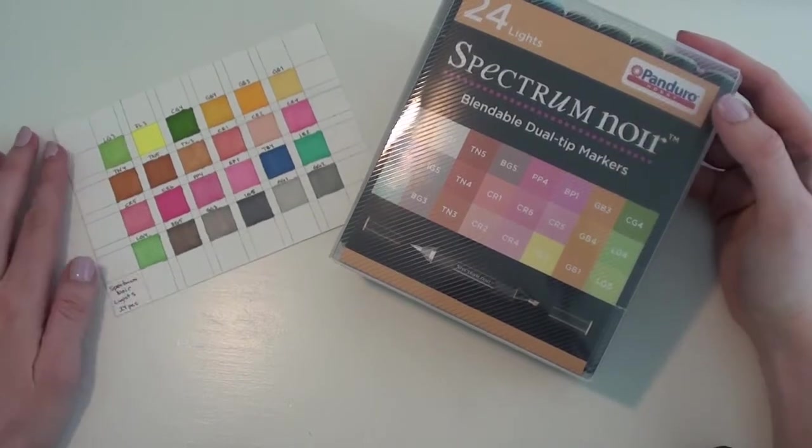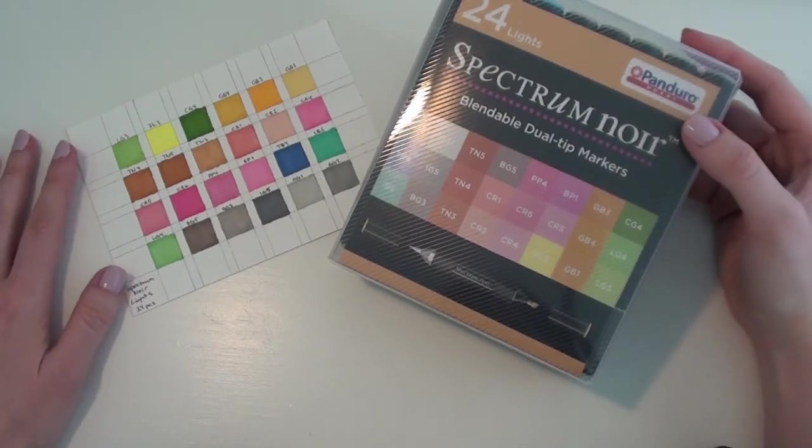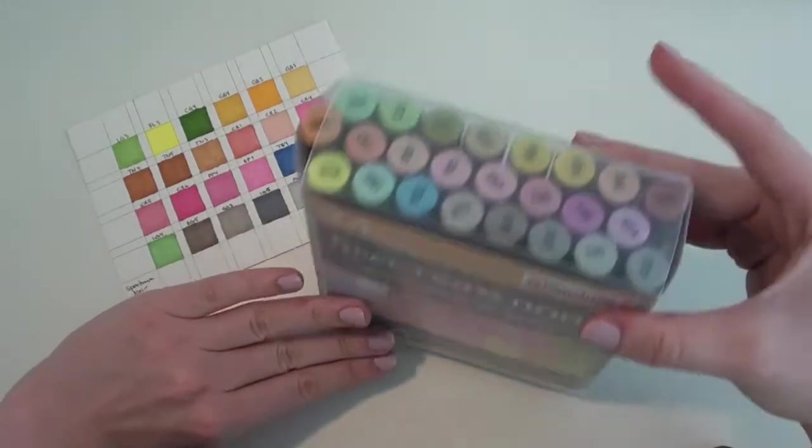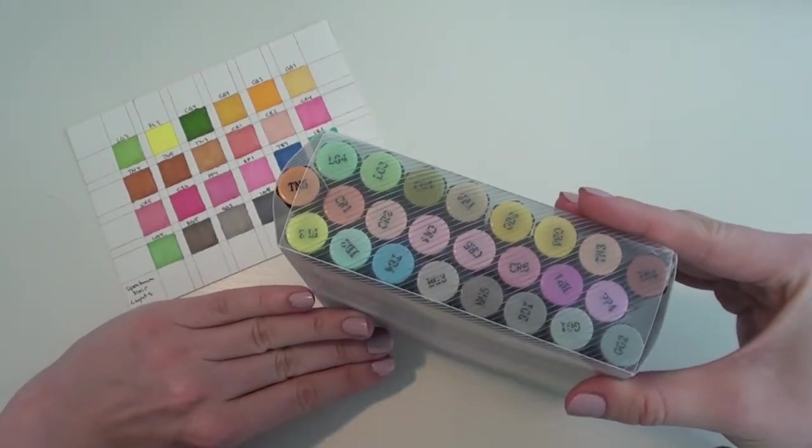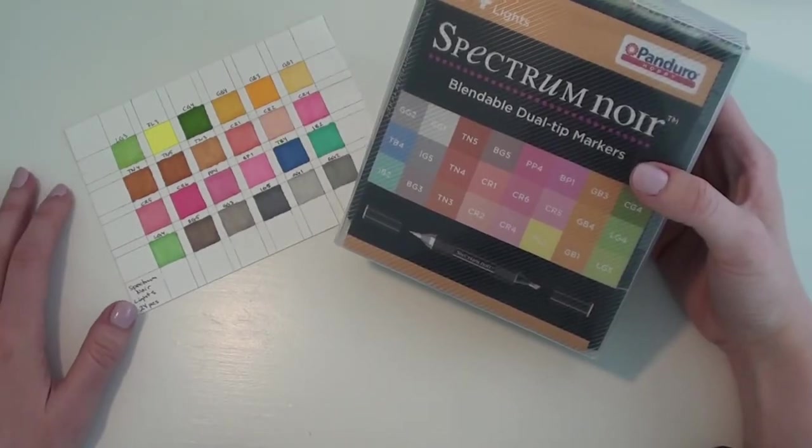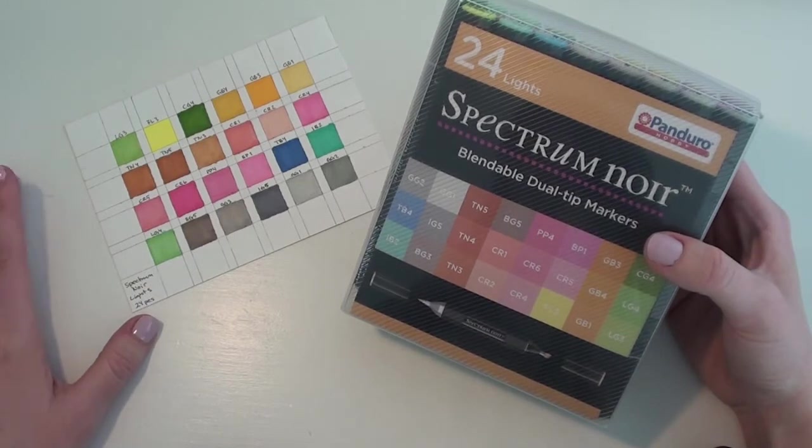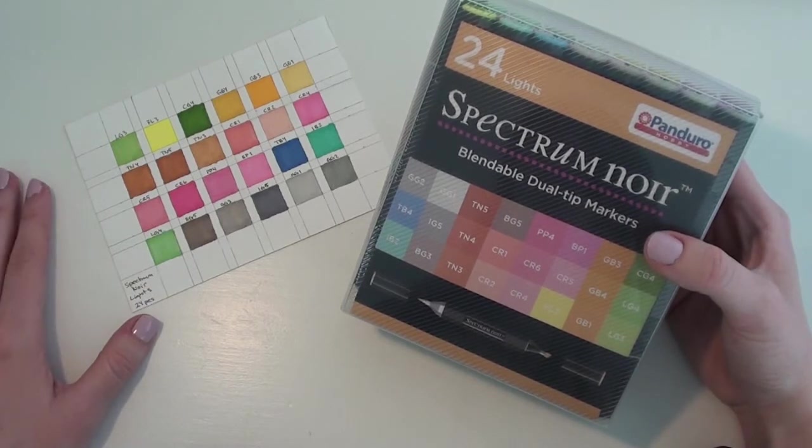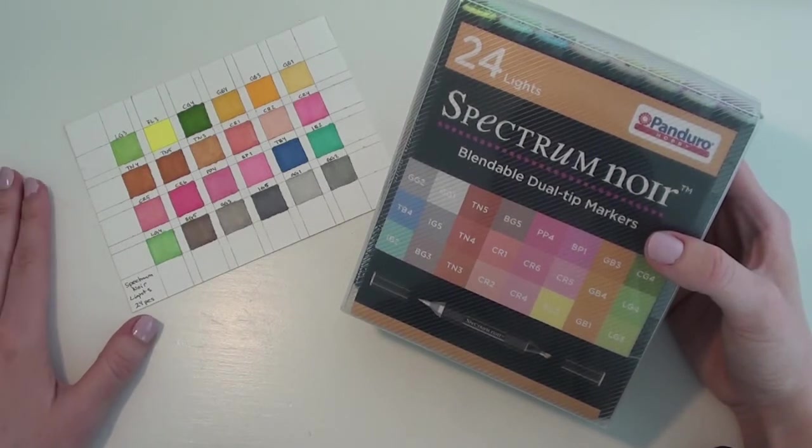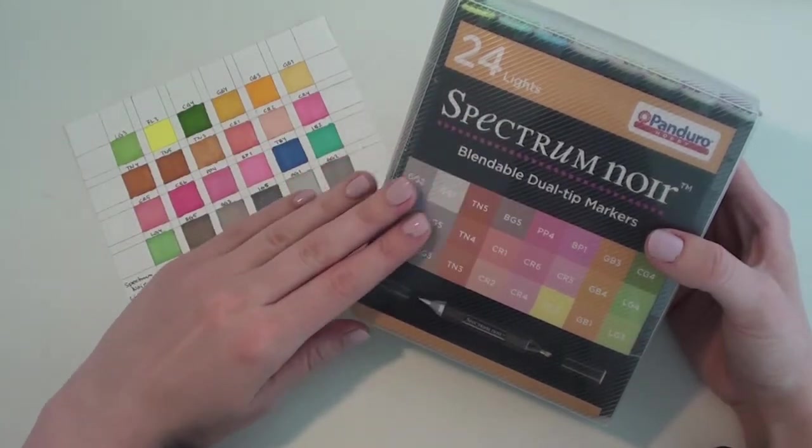And then lastly there are these which are the Spectrum Noir blendable dual tip markers. They're alcohol based markers and I got a set of 24. This set in particular are called The Lights. I'm still a little bit on the fence about them because I just recently bought them. They're maybe not even a week old. I like them, I do, but they smell a lot. They reek and it bothers me a little, but I do want to use them. So we'll see what happens. I got them from Penduro actually.